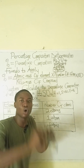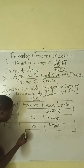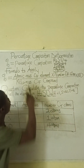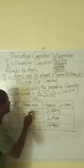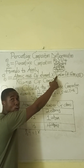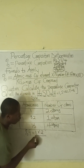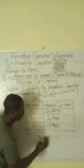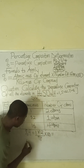For hydrogen: percentage composition of hydrogen = (atomic mass of hydrogen × number of atoms) / molar mass × 100 = (1 × 2) / 98 × 100.